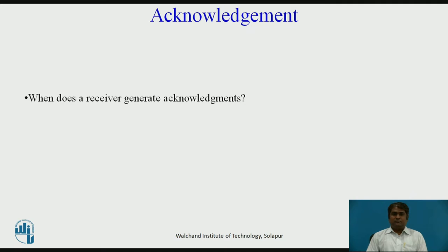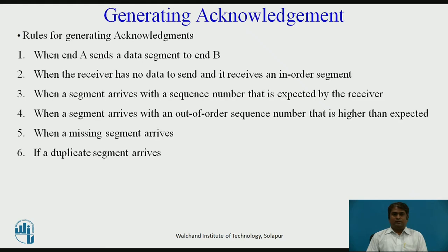Let us think about when a receiver generates acknowledgements. From the inception of TCP, several rules have been defined and used by several implementations. Here are the most common rules. The order of the rules does not necessarily define importance. The first rule: when end A sends a segment to end B, it must include an acknowledgement giving the next sequence number it expects to receive — piggybacking acknowledgements. This rule decreases the number of segments needed and reduces traffic.